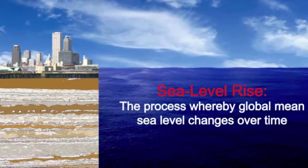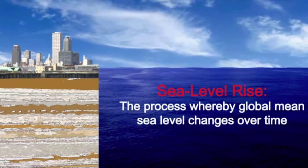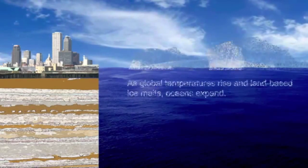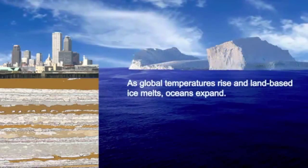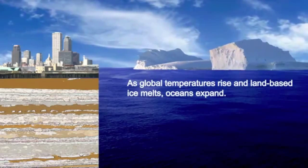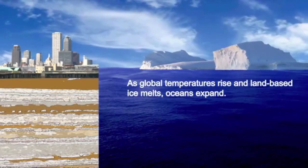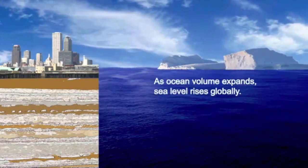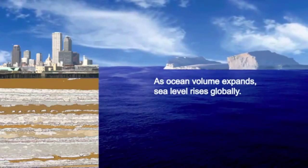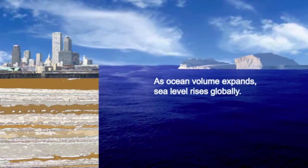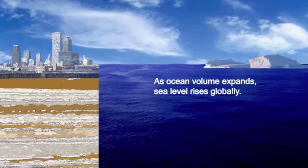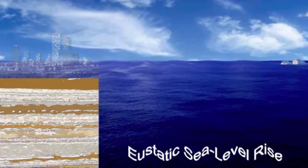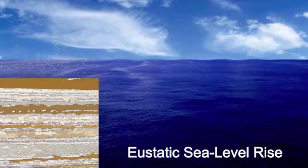The other process contributing to land loss is sea level rise. As global temperatures rise and land-based ice melts, oceans expand. As ocean volume expands, sea level rises globally. This is known as eustatic sea level rise.